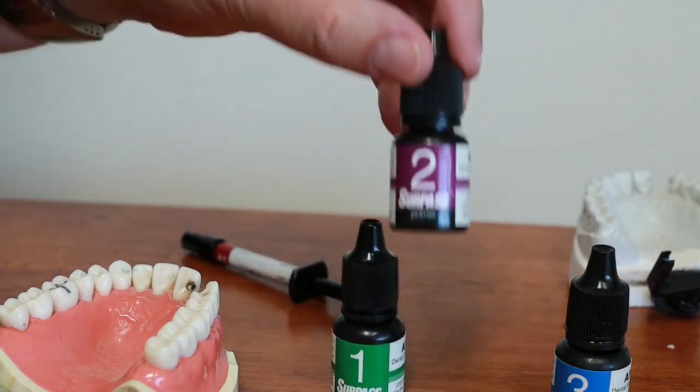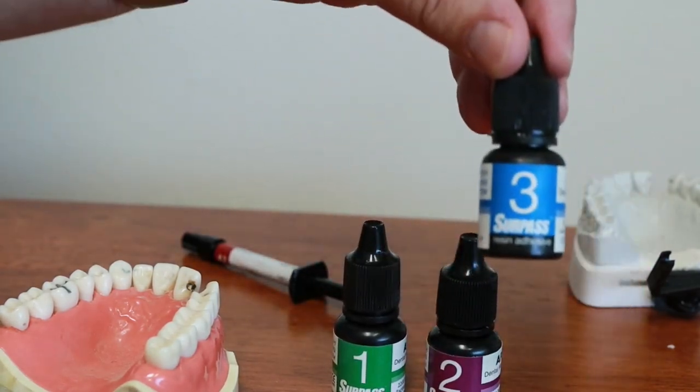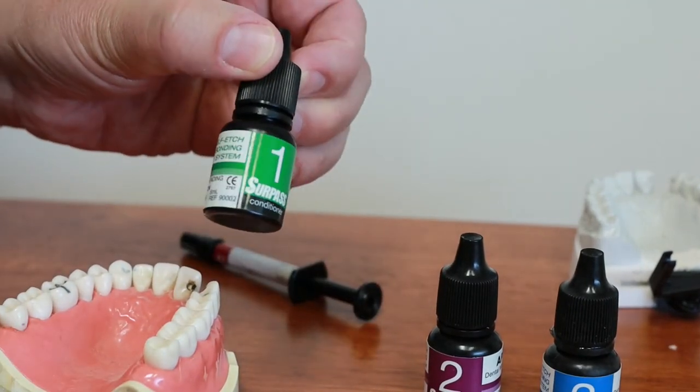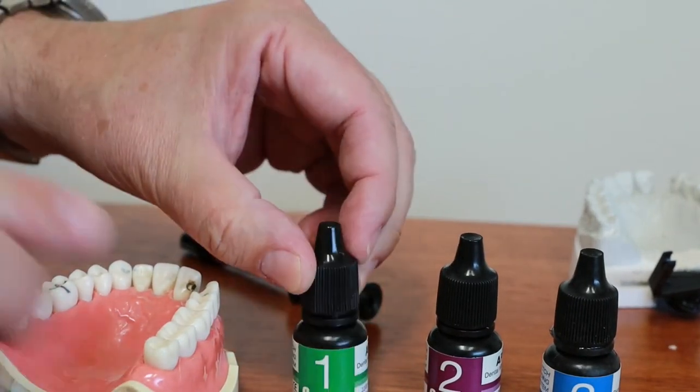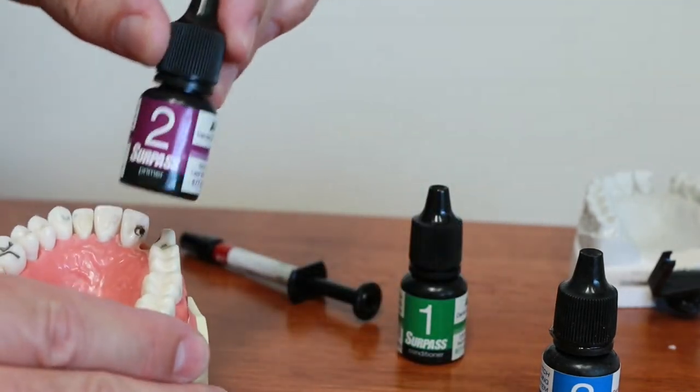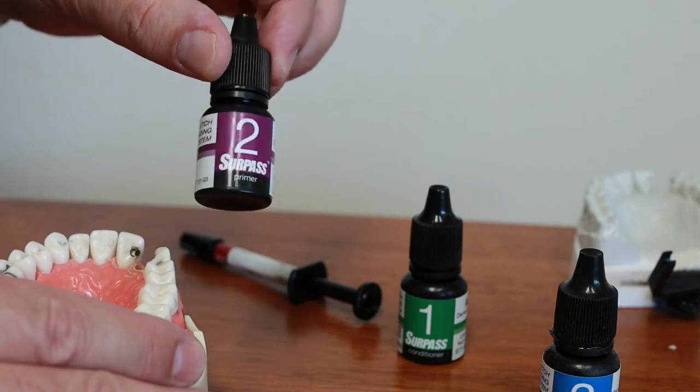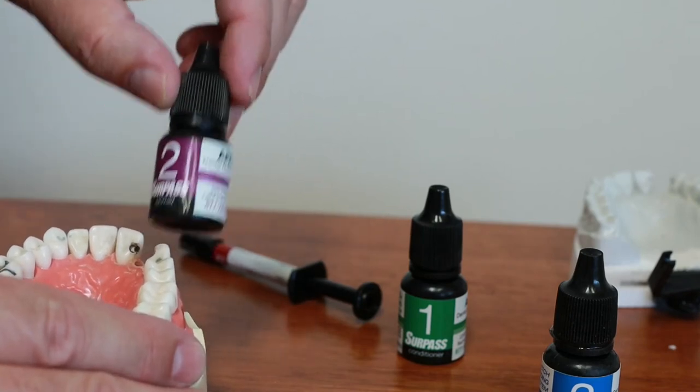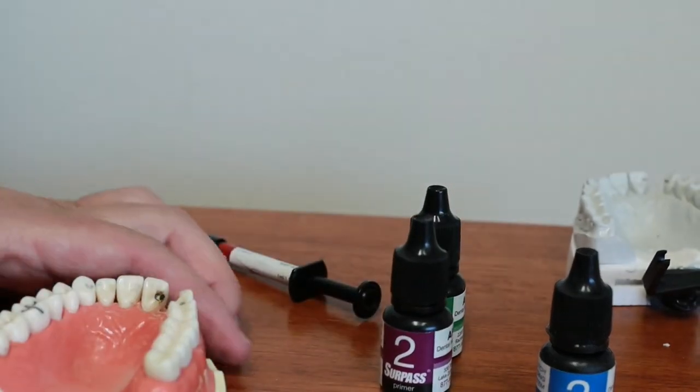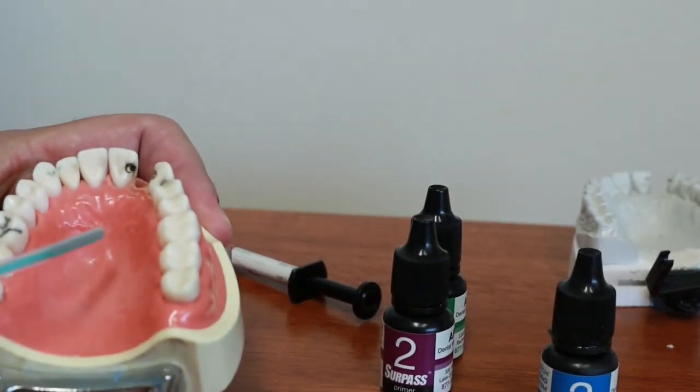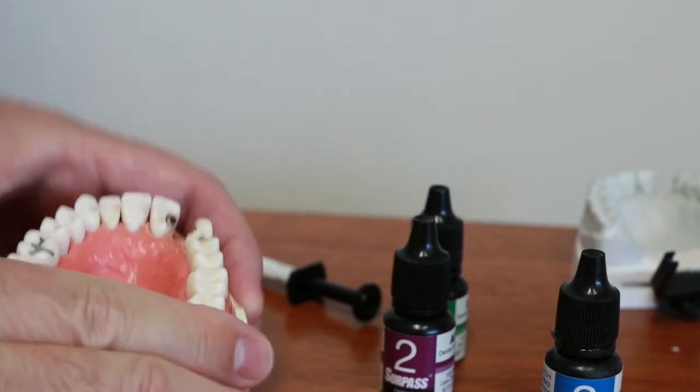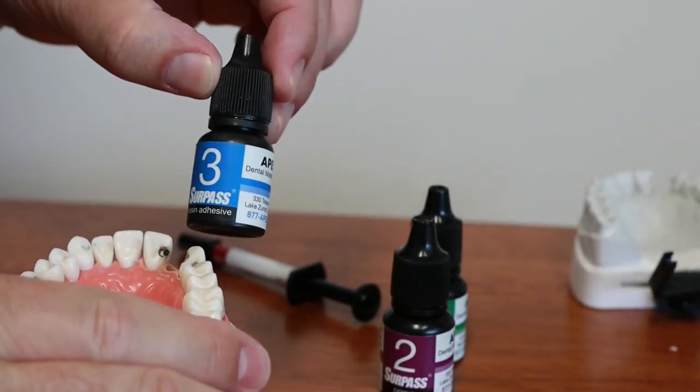First step is bottle number one which is basically the etching. Paint that on for about ten seconds onto each tooth. Then onto each tooth add two coats of number two which is the primer. It neutralizes the etching. Once that's on there then I just air dry it with my syringe. Dry it out really well. And then the last step I use is the bonding agent. This is the actual glue if you will. Put a coat of that on there and then I'll thin it a little bit.